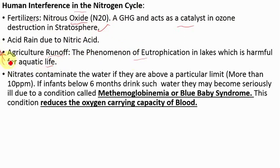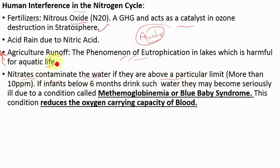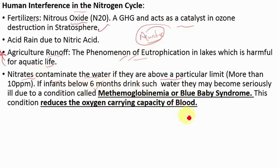I will explain the concept of eutrophication in detail in the lecture on aquatic ecosystems. Regarding nitrate contamination: if there are more than 10 parts per million of nitrates in water, it is polluted. If infants below the age of six months drink such water, they become seriously ill due to a condition called methaemoglobinaemia, or blue baby syndrome. It is a problem in which the oxygen-carrying capacity of the blood reduces, and the person may also die. Children drinking nitrate-contaminated water can suffer this condition.